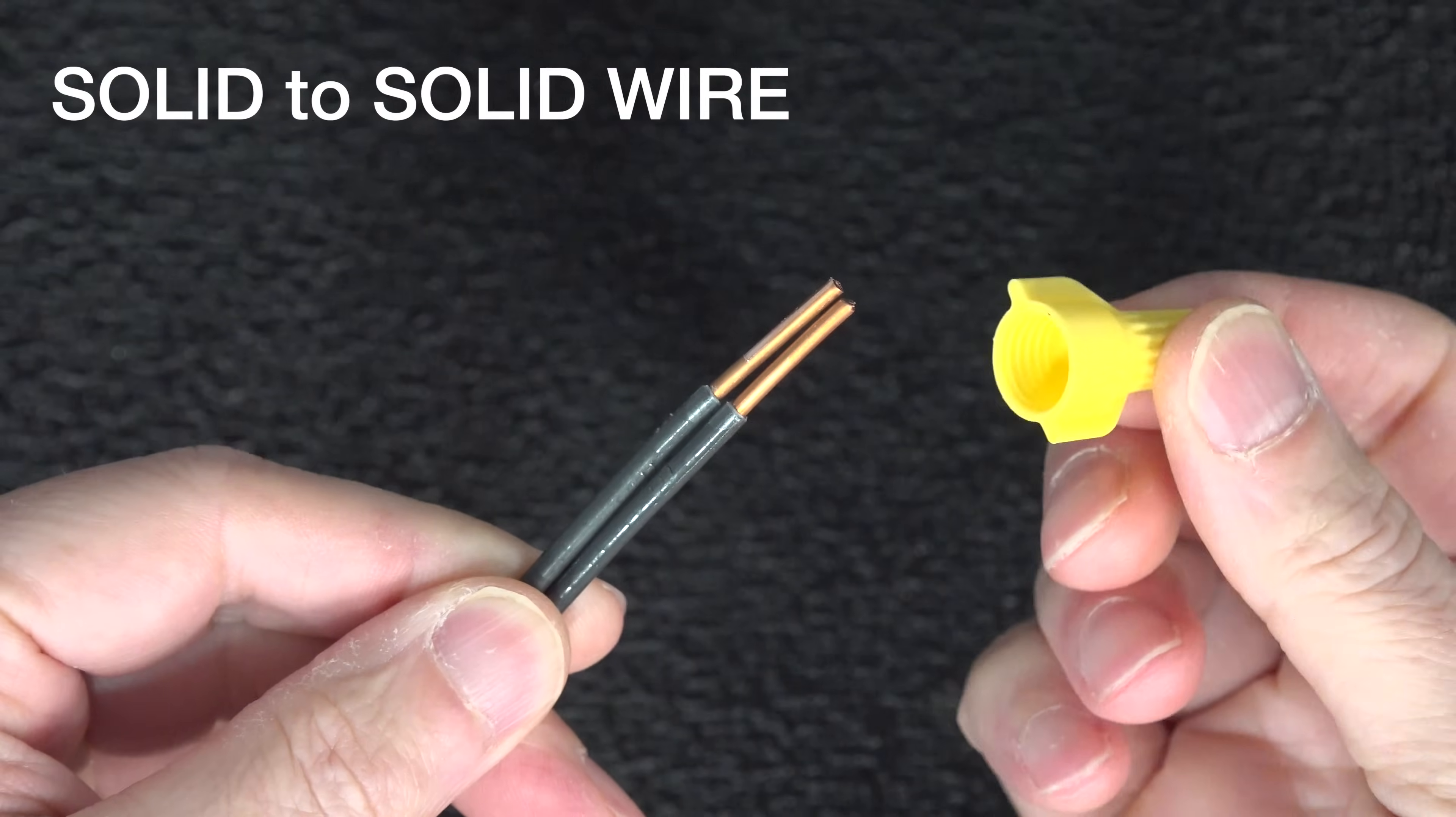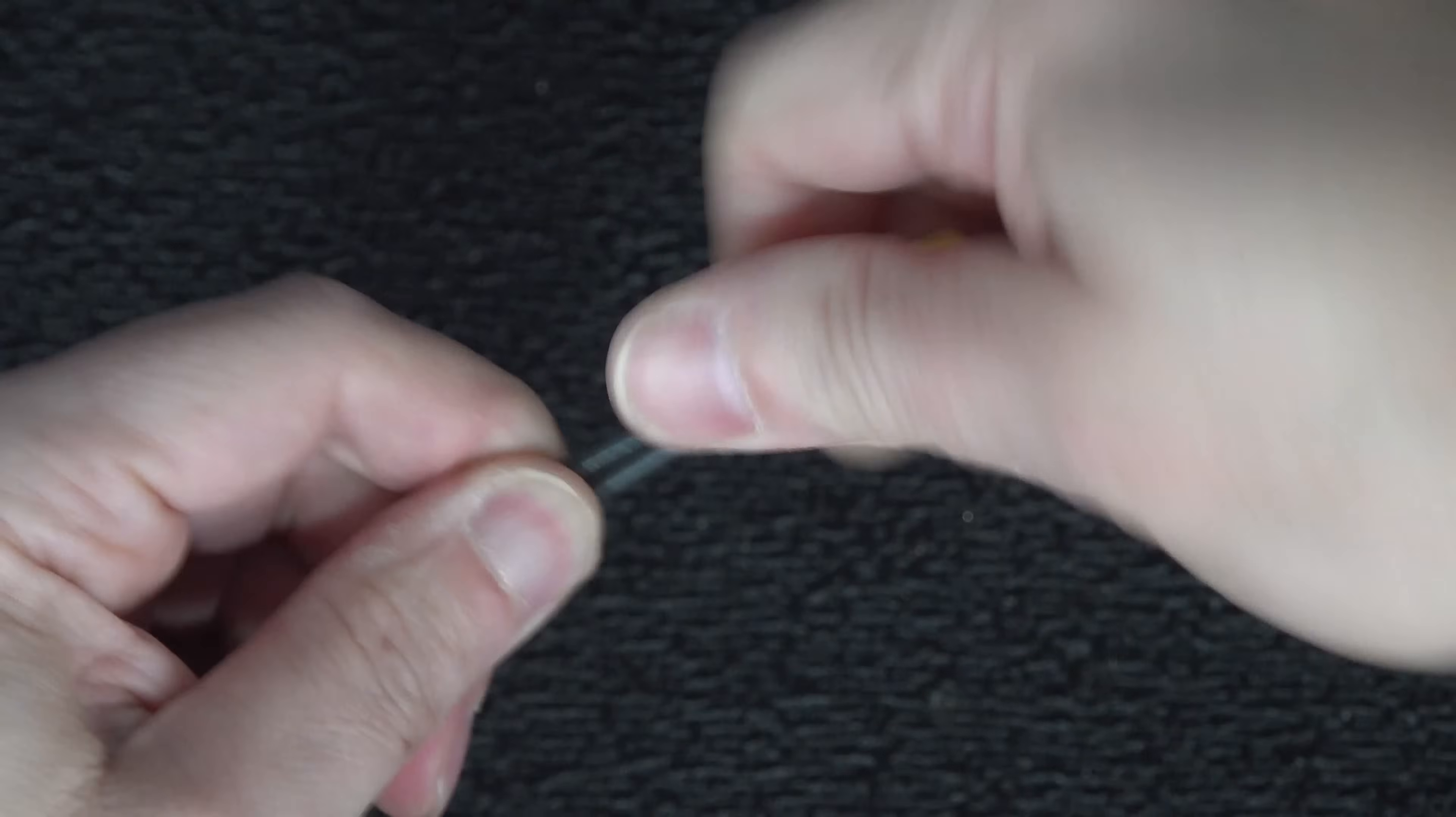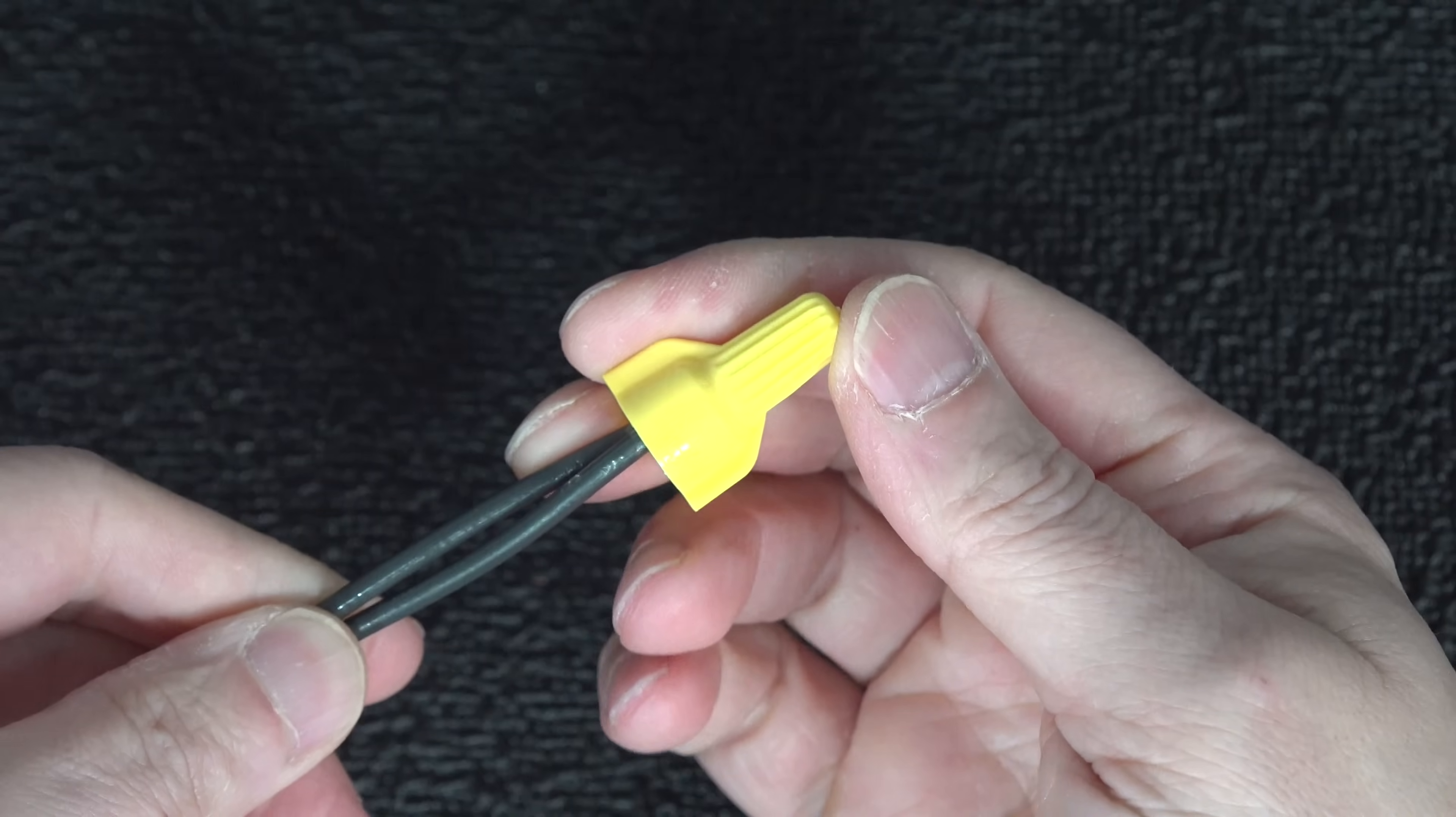If you need to connect up two solid wires, it's not really a big deal. Just strip them to length, put a wire nut on top, and give it a spin, and you'll end up with a good connection.